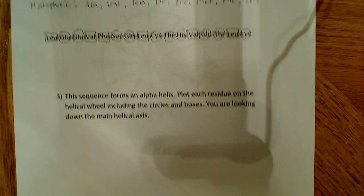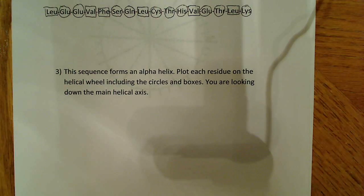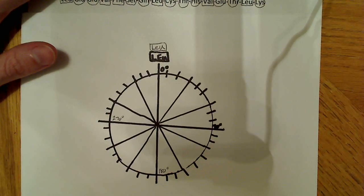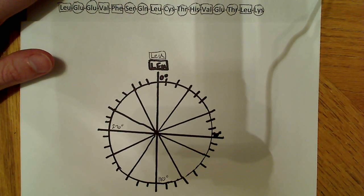Now, the next part of the question here says, The sequence forms an alpha helix, so they're telling us this is an alpha helix. It says, plot each residue on the helical wheel, including the circles and boxes. You are looking down the main helical axis. So, they're just letting you know that you basically have an overhead view of the helix. So, what I did was I made up this little helical wheel here. I'm hoping to get it all on camera at the same time, including the residues, obviously.